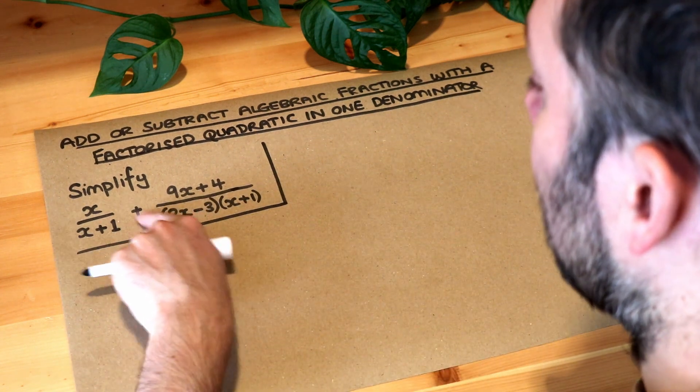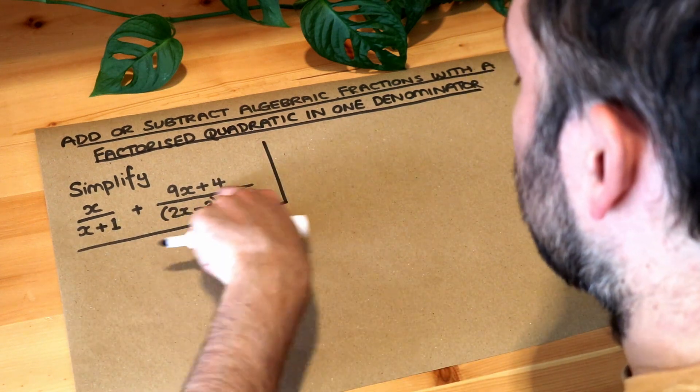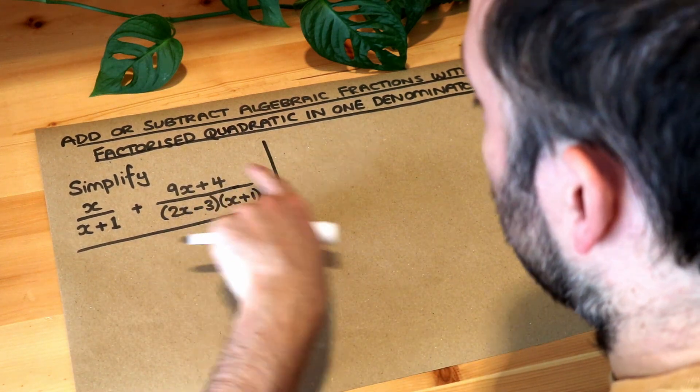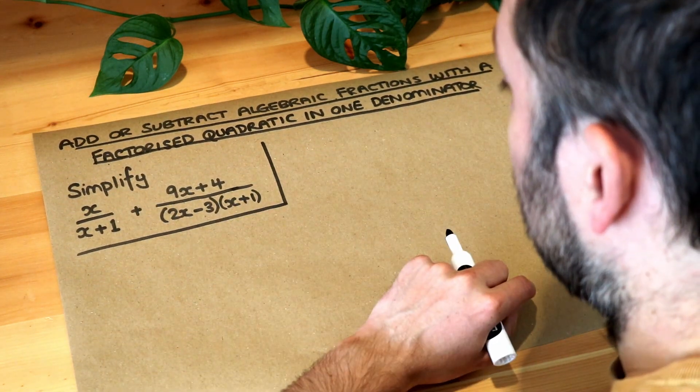So we're trying to add, in this case, these two algebraic fractions and notice we've got a quadratic denominator here. Quadratic because if you were to expand this out you'd have an x squared term and it's already factorised for you.